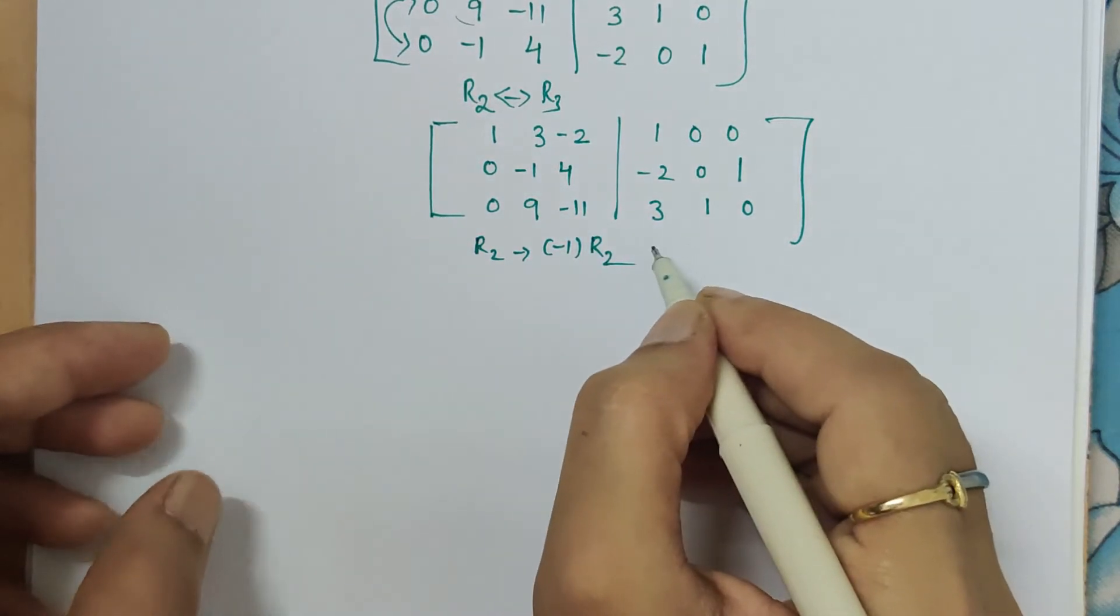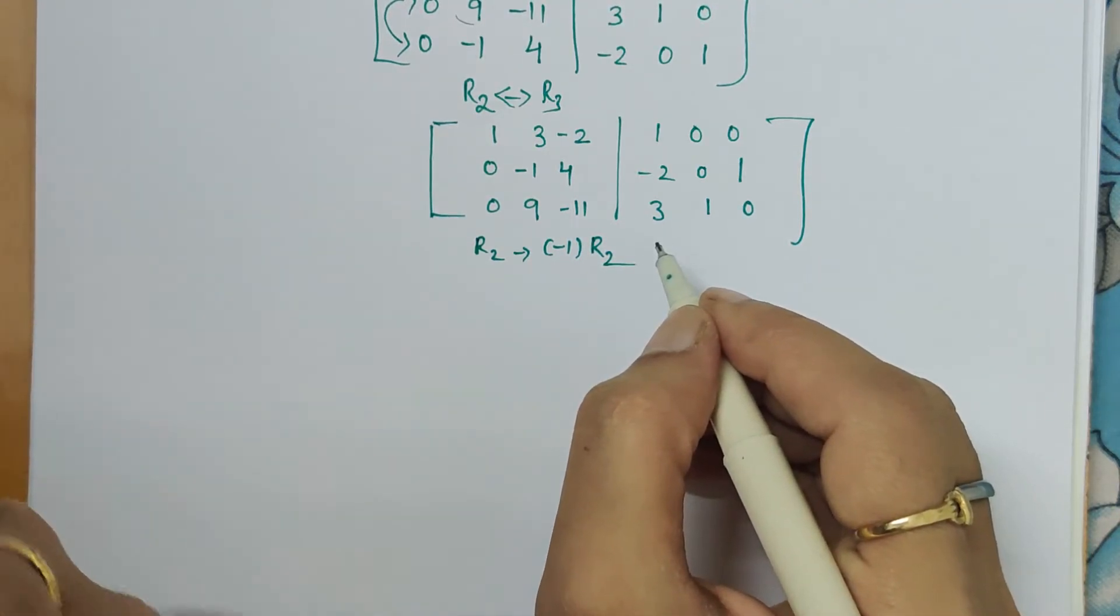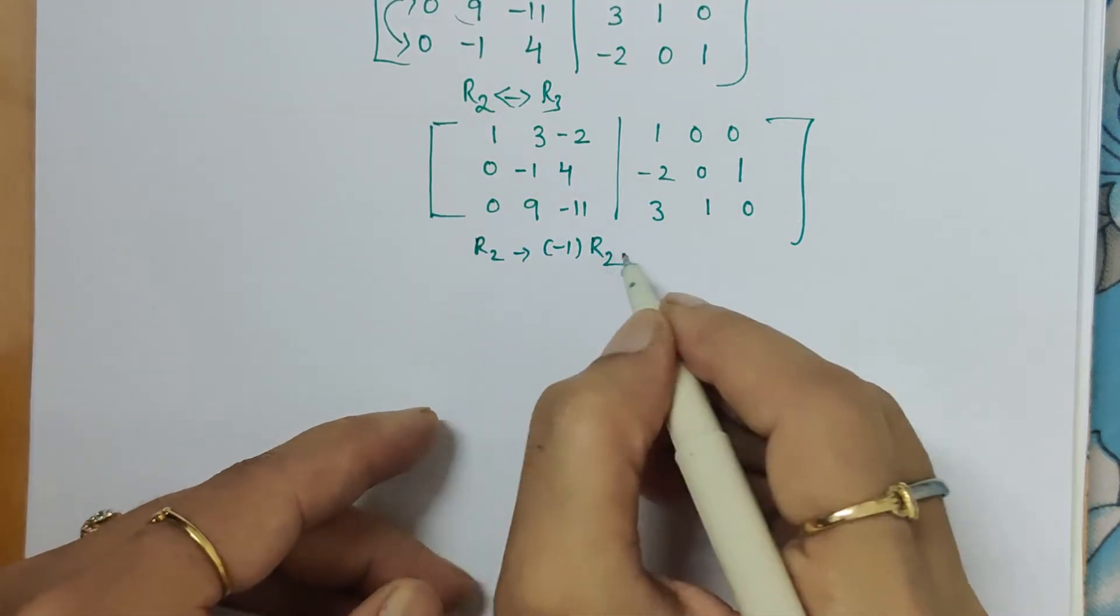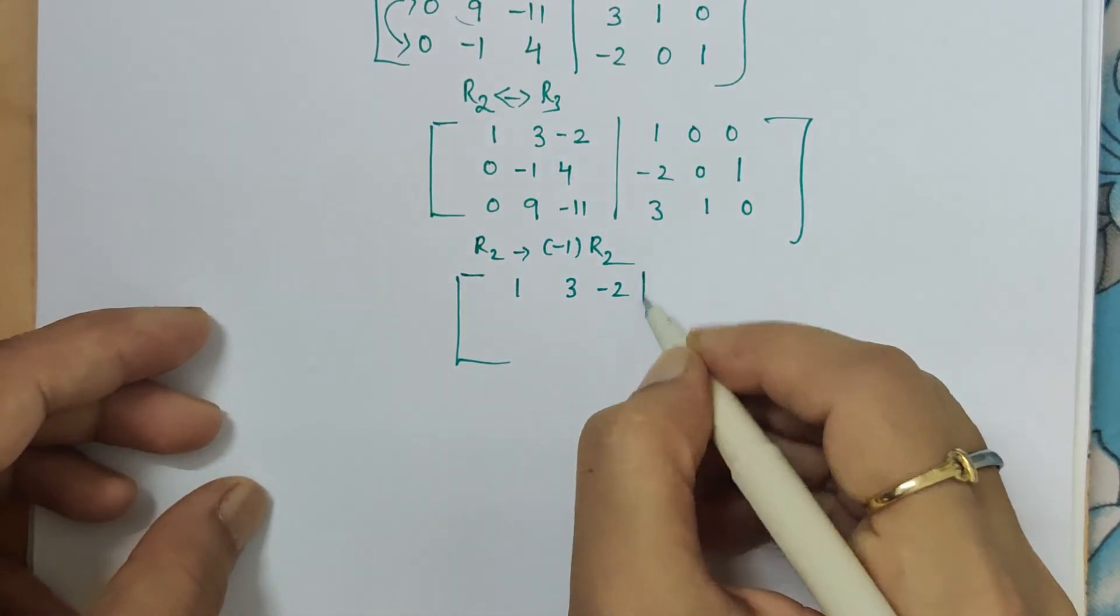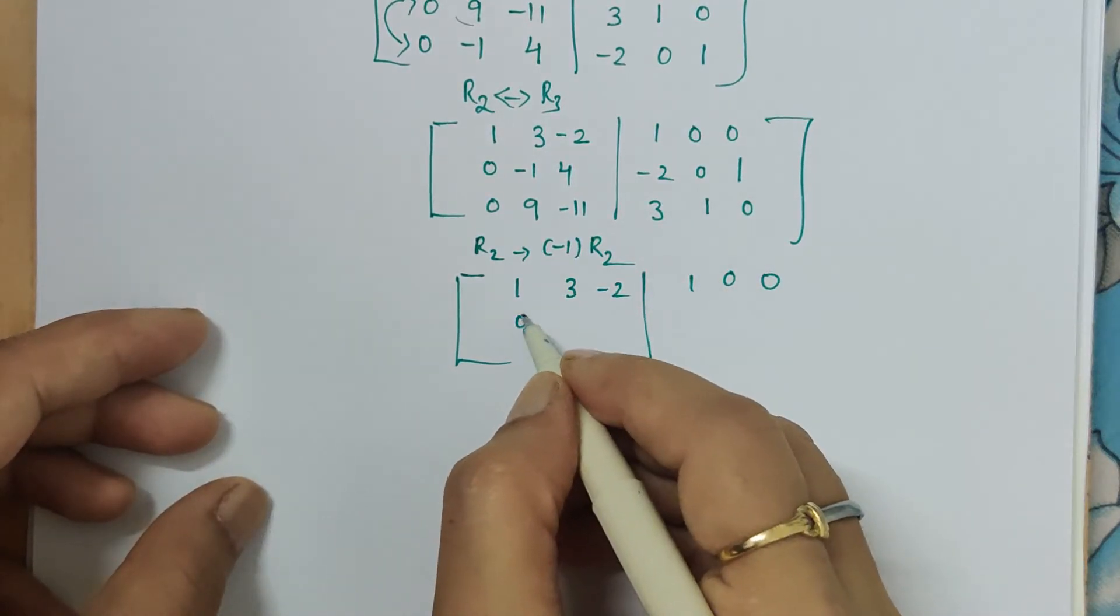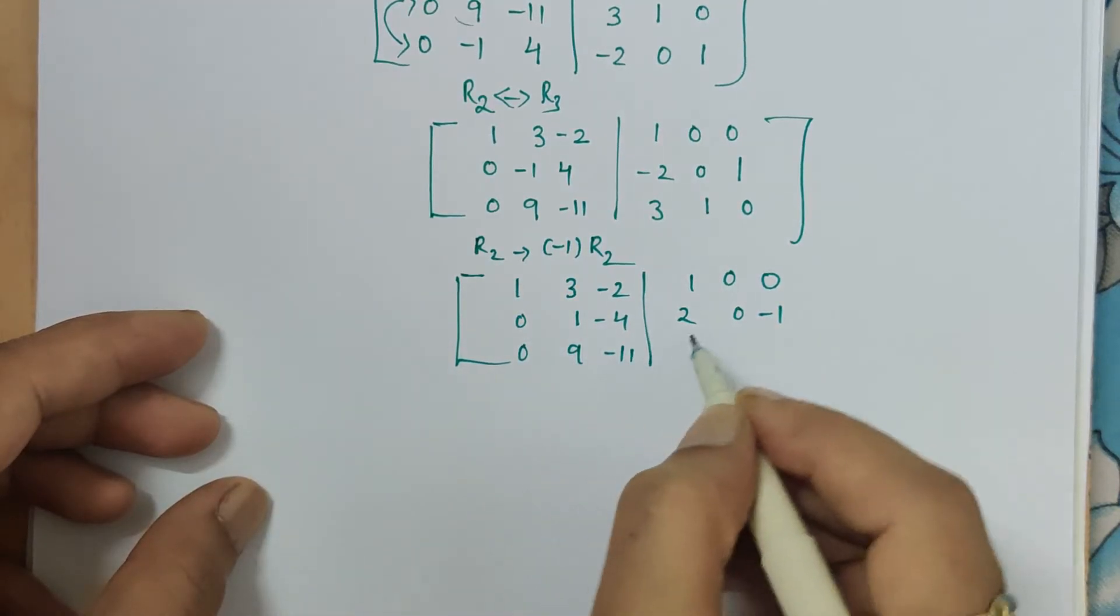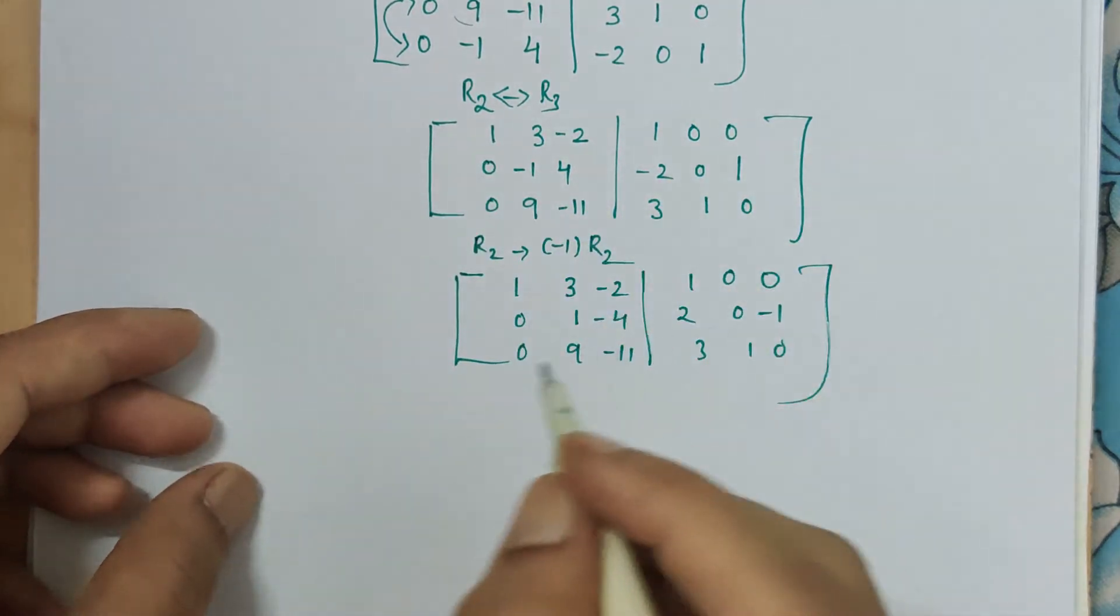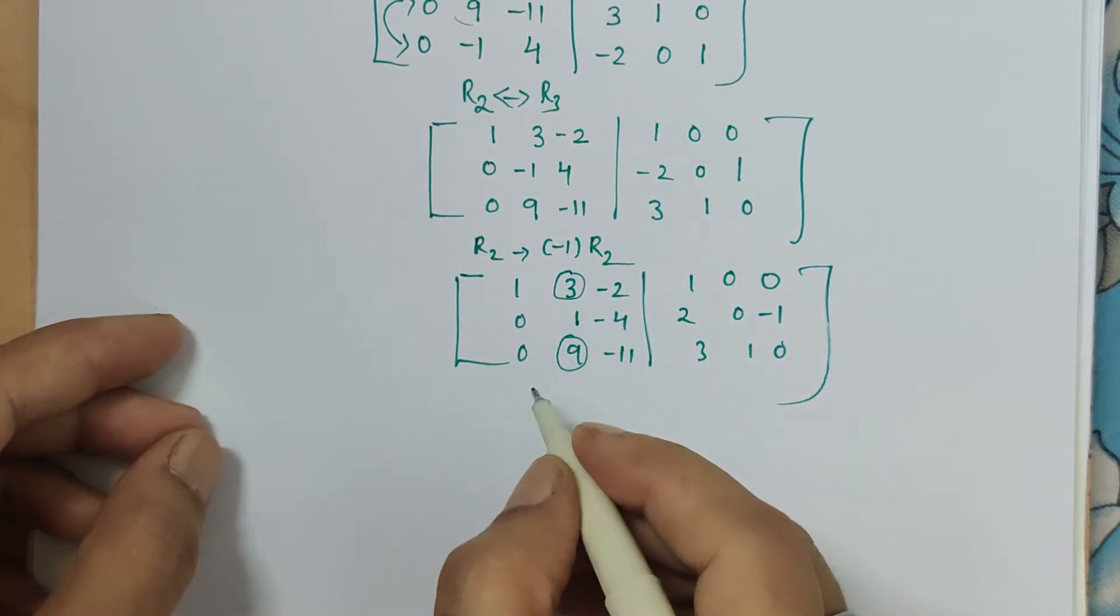These are the basic operations which we can do. In another video I will be making based on what are elementary operations which you can apply. Here I am considering that you are already aware of it. So I am directly applying the operations. The new augmented matrix I get is this: 0, 1, minus 4, 2, 0, minus 1, 0, 9, minus 11, 3, 1, 0. There is a change in negative sign on all the elements compared to before.